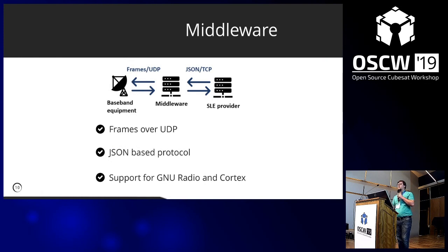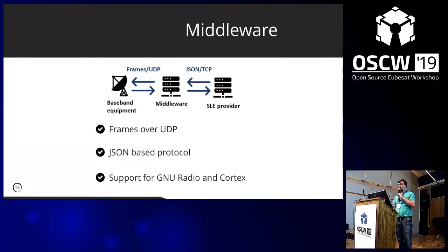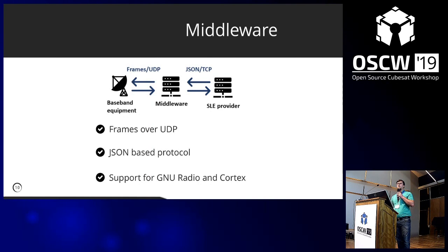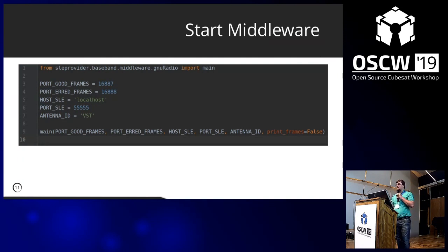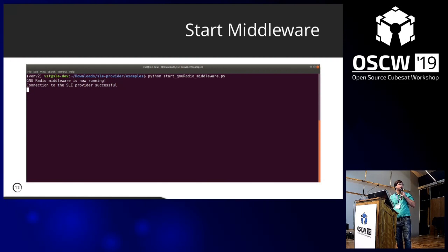Next up is our middleware, which is used to interface with different kinds of ground station equipment. We have an implementation for GNU Radio, so you can use your Satnox station with a UDP port that is already existing. Or you can also use professional ground station equipment like a Cortex modem. On the other side, we have a JSON-based protocol that connects to our SLE provider implementation. You can configure it — for example, when using the AX25 decoder you can handle good frames and bad frames, give your antenna a name or ID, and start it.